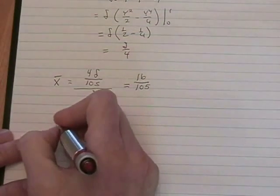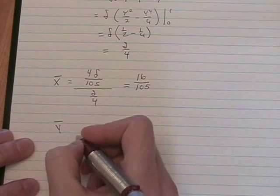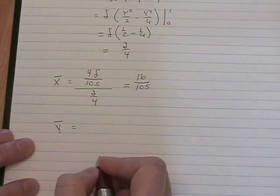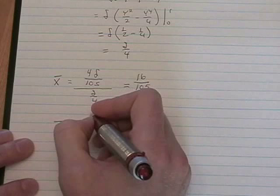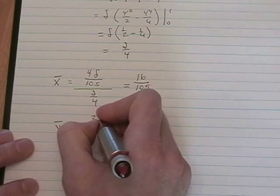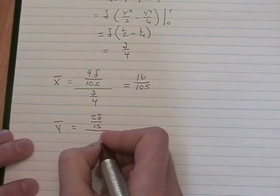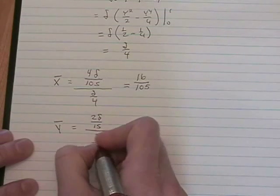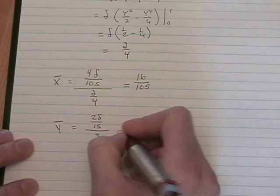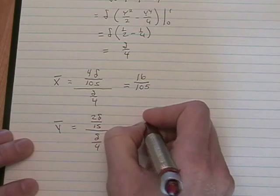To get y bar, we do m sub x, the moment about the x axis, divided by delta over 4. So that's 2 delta over 15 divided by delta over 4, which is 8 over 15.